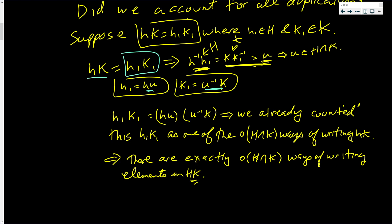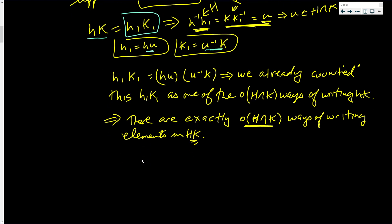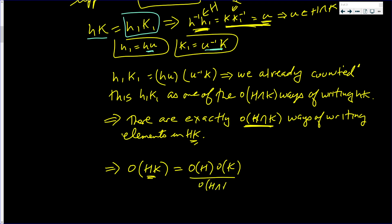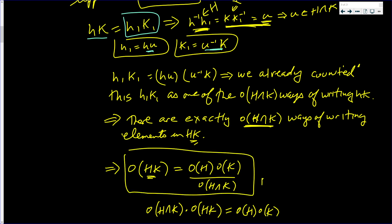Each element in HK can be written exactly |H∩K| times. So this implies that the order of HK, which has lots of duplications, does not simply equal the order of H times the order of K. But if you divide by the order of H∩K, it does work out — and the theorem has been proven.